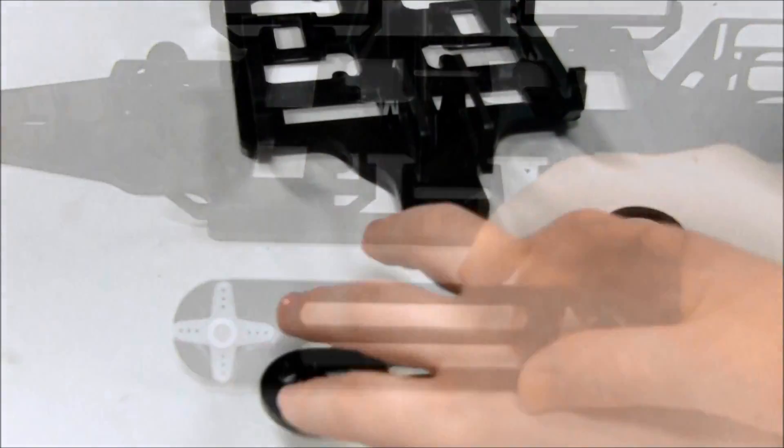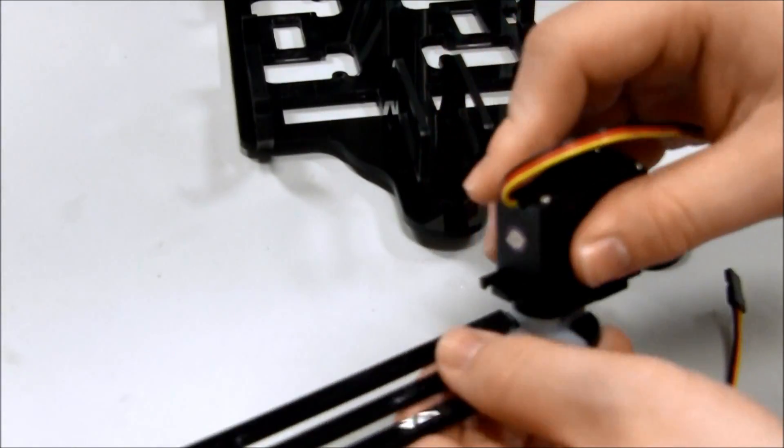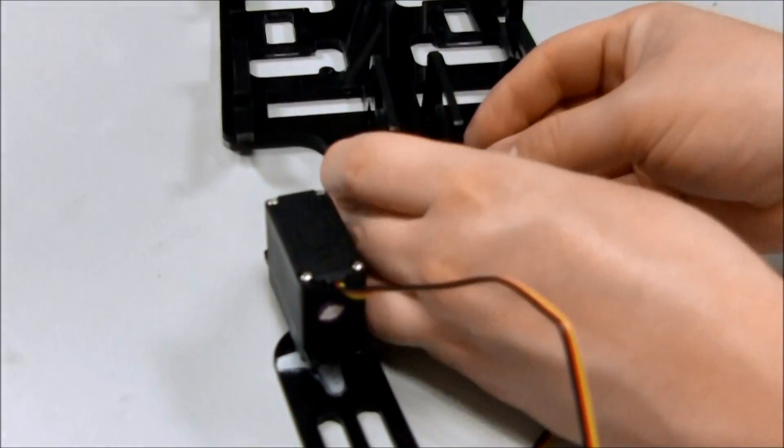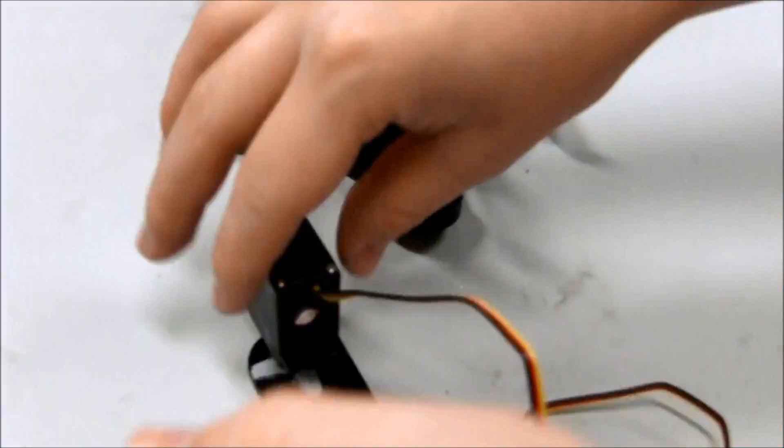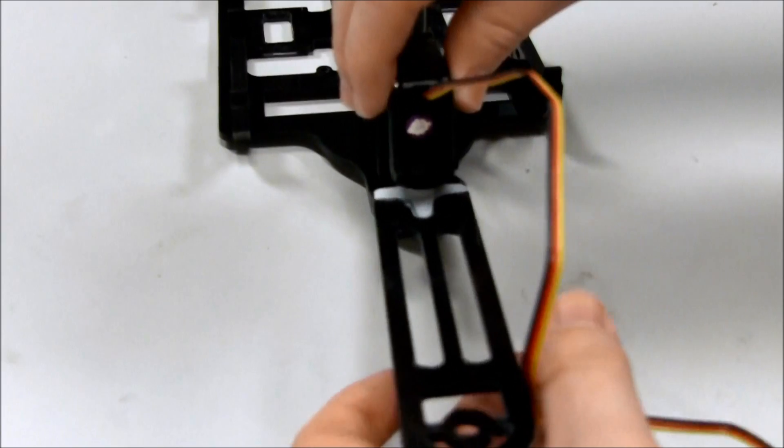Take the servo and attach the servo to the cross horn at the zero position. Once attached, put the tail spacers in between the tail and the body. Slide the servo in between the tail servo plates.